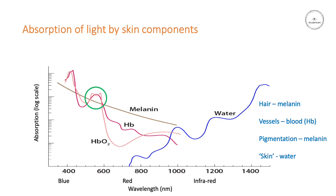Blood absorbs very strongly between about 500 and 600 nanometers. The absorption here is greater than absorption by melanin, so this means we can specifically target the blood vessels — the hemoglobin in the blood vessels — and we'll get preferential absorption in the blood compared with melanin. Now we don't use these peaks here because historically it was decided that this might cause too much absorption in melanin, and the researchers back in the day decided that was maybe not a good thing. So we stuck with the second lot of peaks — the lower peaks.